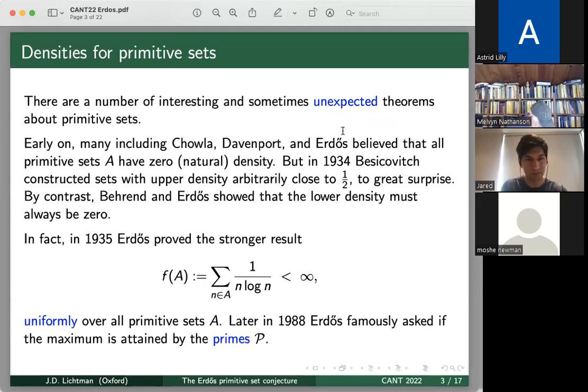So in the study of primitive sets, there are often some interesting and unexpected results. So early on in the 1930s, many people, including Chowla, Davenport, and Erdős, believed that all primitive sets have zero natural density. However, in 1934, Besicovitch actually constructed counterexamples of primitive sets whose upper density got arbitrarily close to one half. And this was a great surprise to people at the time. By contrast, Behrend and Erdős showed that the lower density must always be zero. And so, in particular for a primitive set A, the natural density may not always exist, but the lower density must always be zero. And the upper density can get arbitrarily close to one half. And this one half is, in fact, sharp.